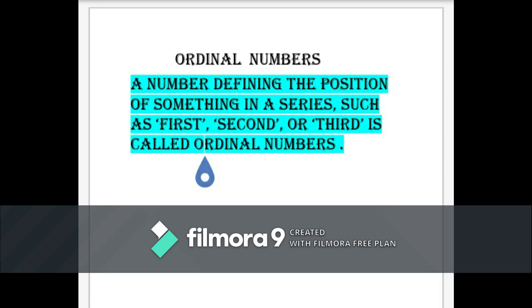For example, जैसे आप किसी race में participate करो और आप first आएं और आपका friend second आए, तो इसी first, second number को ordinal number कहते हैं। ये numbers हमें position बताते हैं — चाहे वो exam हो, चाहे कोई game हो — उसमें हमारी क्या position है, वो rank बताने वाले numbers को ordinal number कहते हैं।